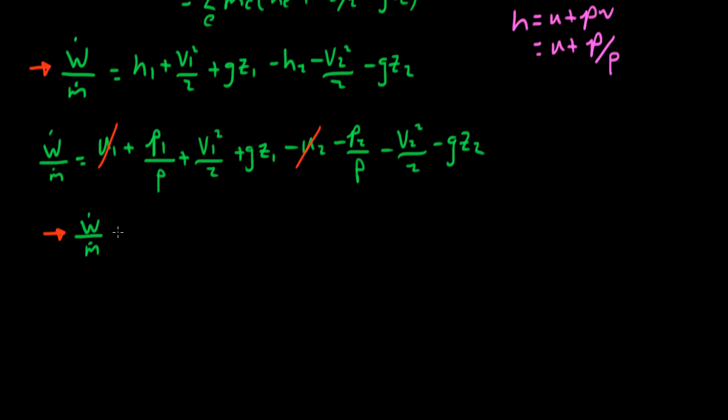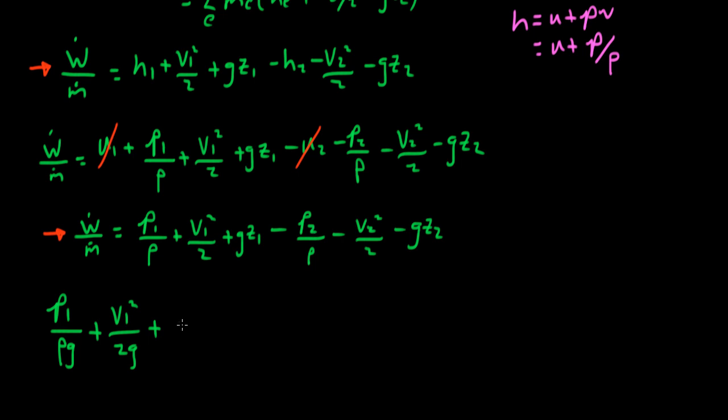Finally, we have that the power divided by the mass flow rate is equal to the pressure at station 1 divided by the density, plus the velocity at station 1 squared over 2, plus the acceleration due to gravity times the elevation at station 1, minus all of the same terms at station 2, plus the pump power divided by the mass flow rate times the acceleration due to gravity.